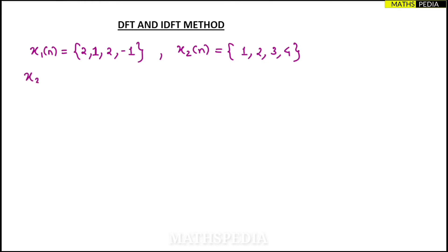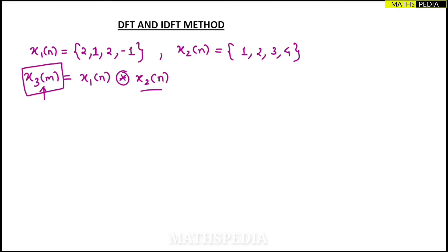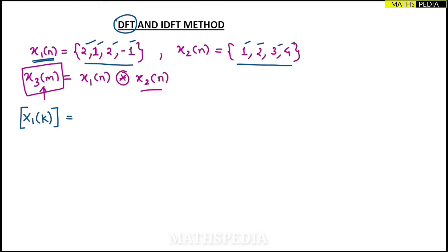We are going to find out x3(m) — you can take any variable. x3(m) is the resultant of circular convolution of both sequences, that is x1(n) circular convolution x2(n). The first step is to find the DFT of each sequence. One important thing: the sequence length should always be the same in circular convolution. Here we have four elements in each sequence. If the lengths are not the same, we add zeros to match them.